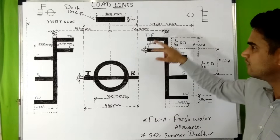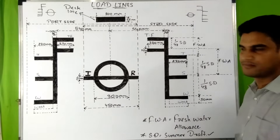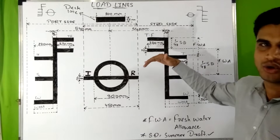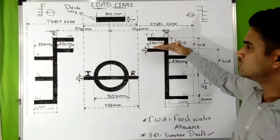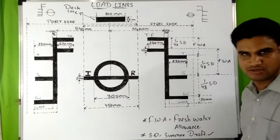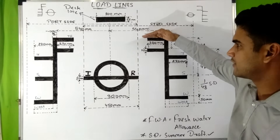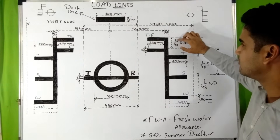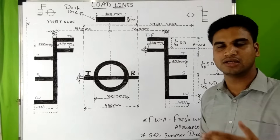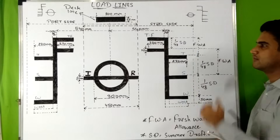In the after part of the vertical line we have two more markings: F for fresh water zone and TF for tropical fresh water zone. A ship can be loaded up to the upper edge of each respective marking. The height difference from the upper edge of the tropical fresh water zone to the upper edge of the fresh water zone is also 1/48 of the summer draft. The top edge of each marking gives the exact level.